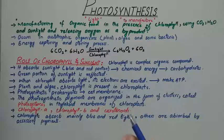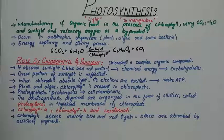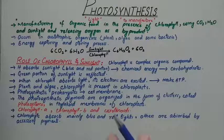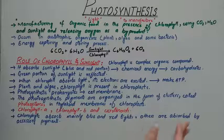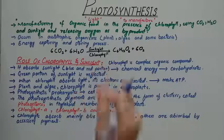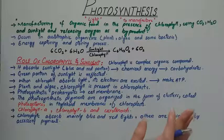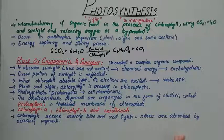Photosynthesis also provides oxygen, which is used by all aerobic organisms for respiration. For the respiration process, we take the oxygen which is formed by autotrophic organisms. Whether the autotrophic organism is a plant, algae, or some kind of autotrophic bacteria, they form the oxygen which is utilized by other living organisms.